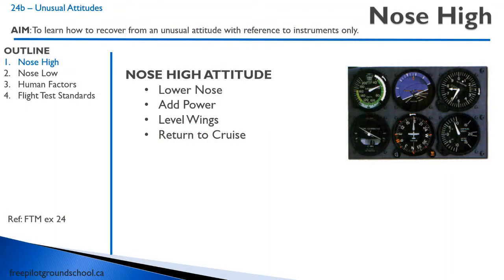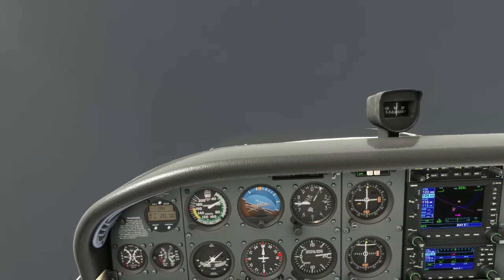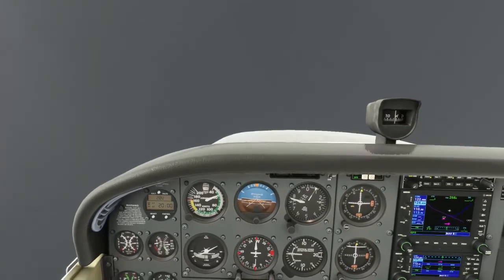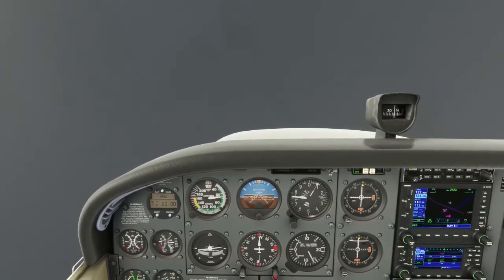Let's say we're in an unusually nose-high attitude — we're looking up. Our airspeed is rapidly decreasing, our attitude indicator is showing nose up, and we're in a climb. The recovery: lower the nose, add power, level the wings, and return to cruise. Unfortunately, if you couldn't keep the plane straight and level in cloud, you're probably not going to be able to recover from an unusual attitude. For a nose-high unusual attitude: lower the nose, add full power, level the wings, and return to cruise.